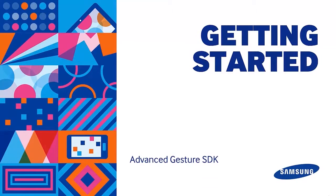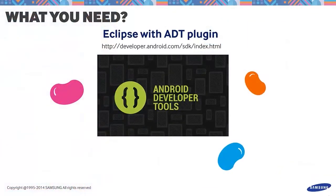Now to get the ball rolling, let's prepare the things we need. You will need the following items. First, we'll need Eclipse with the ADT plugin. Remember, Jelly Bean, or API level 18, is the minimum requirement to use the Gesture SDK.